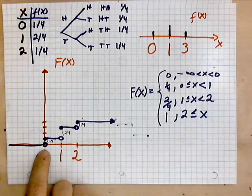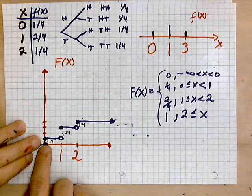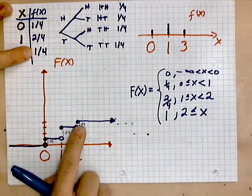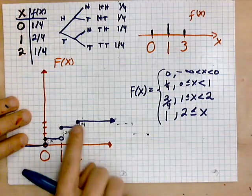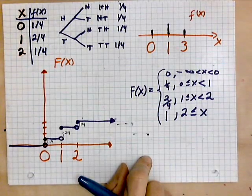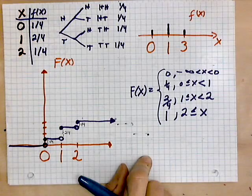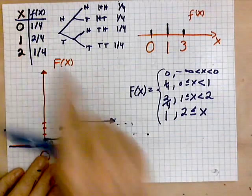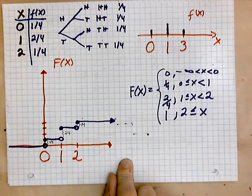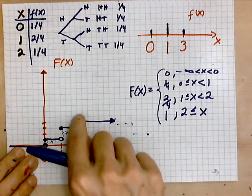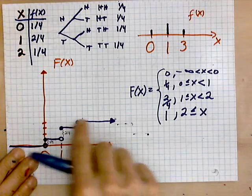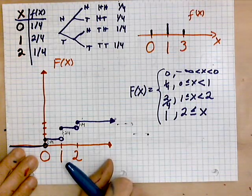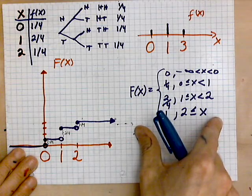To the left of zero, nothing. At zero, there's a jump of one quarter. At one, there's a jump of two quarters. At two, there's a jump of one fourth. And then it's one after that. And a couple things that you should know, which are always true, are these. The jumps here correspond to the entries in the chart. This function is continuous from the right, which means the following: the solids are always on the upper level and not on a lower level. This is known as the probability distribution function.